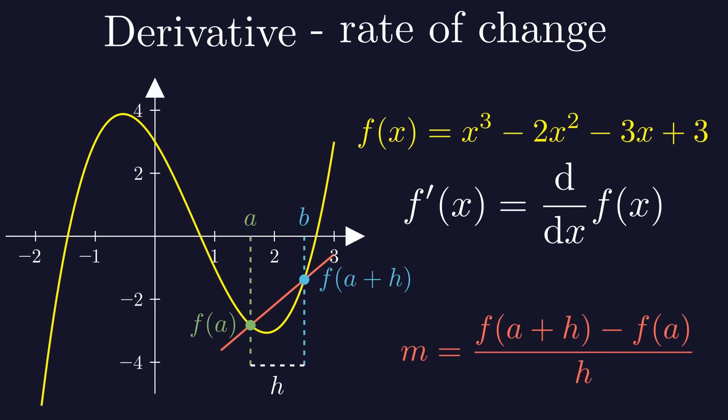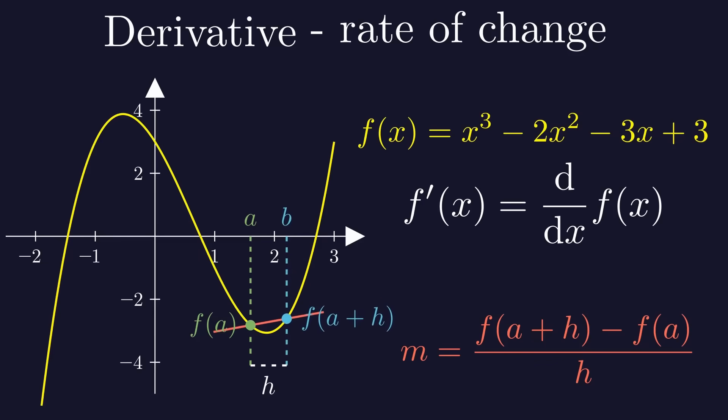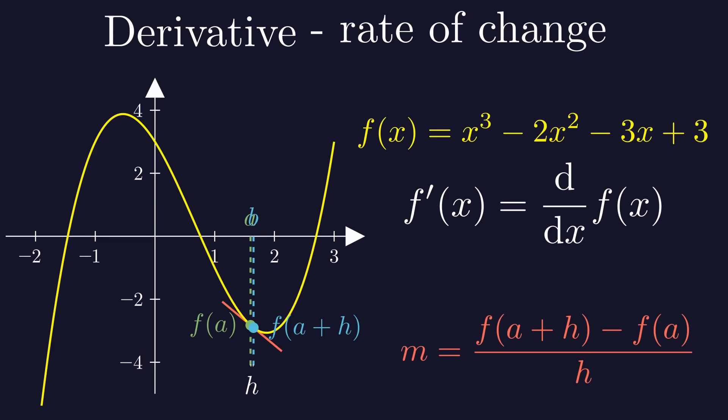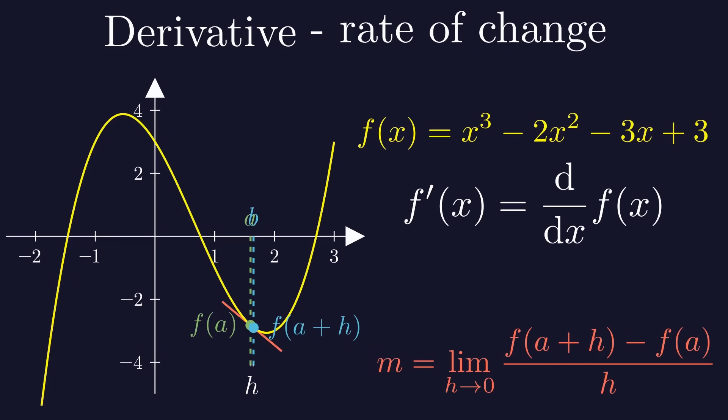This formula gives us the average rate of change between points a and b, but a derivative describes the rate of change at a single point, not over an interval. So to calculate the slope of the tangent line at point a, we just have to make h very small. As h gets closer and closer to zero, b gets closer and closer to a. So to calculate the slope of the tangent line at point a, we just have to take a limit as h approaches zero, and exactly that is the definition of the derivative.